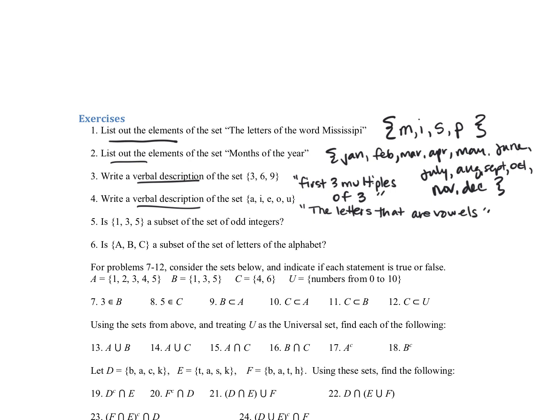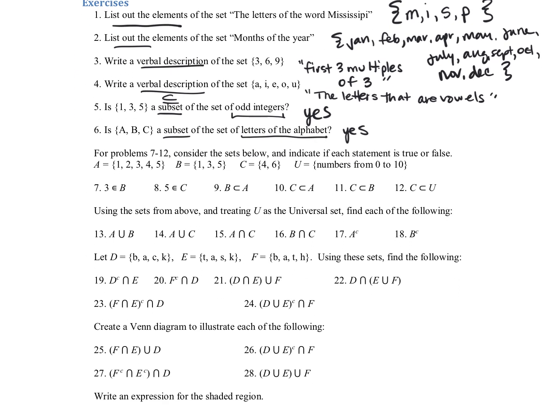Is the set one, three, five a subset of the odd integers? So a subset means that it is a smaller set that contains elements in the bigger set, or it could be exactly equal to it. So remember the notation for subset has that little equal to sign. And yes, it is. One, three, and five are all odd. Is A, B, C a subset of the set of letters of the alphabet? Again, yes. A, B, C are letters in the alphabet, so it would be considered a subset.